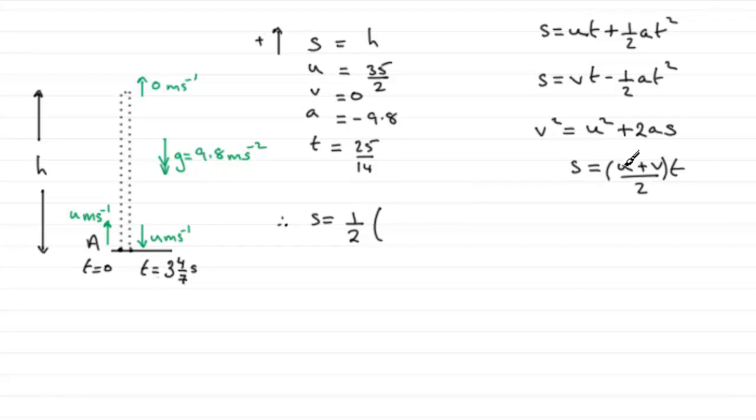So a half of u + v, that's going to be 35 over 2 plus zero, or just simply 35 over 2. And then that's multiplied by the time t, which remember I halved this value here, so that would be 25 over 14. And this works out really nicely. If you work this out, you find that you get that H—s is H—it equals 125 over 8, or if you want it as a decimal, that maximum height H is 15.625 meters exactly.